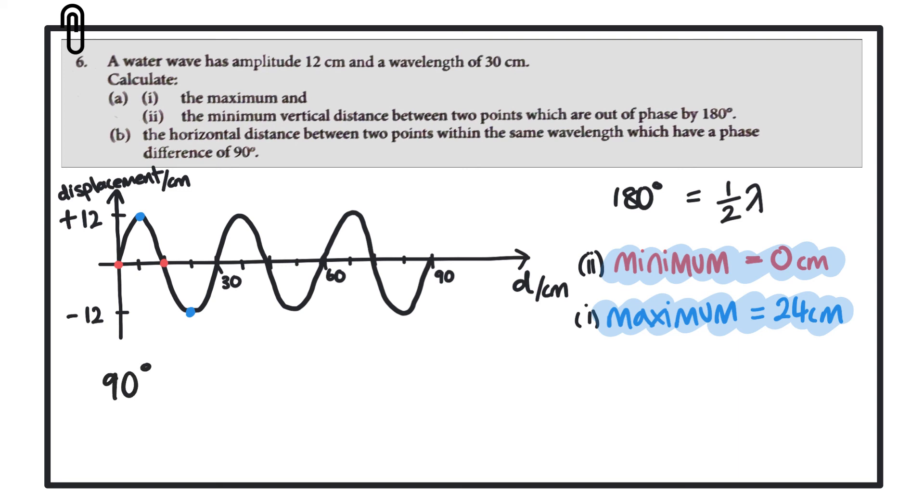90 degrees is a quarter of a wavelength. So 90 degrees is a quarter of a wavelength, 90 degrees out of a total of 360. So 90 degrees represents one quarter of a wavelength. And since one wavelength is equal to 30 centimeters, that means we have a quarter of 30 centimeters, which is 7.5 centimeters.